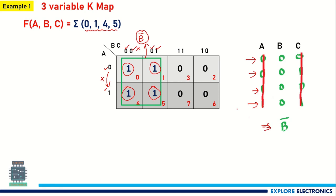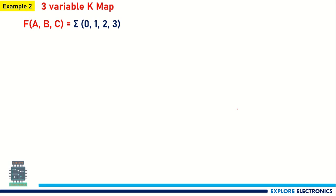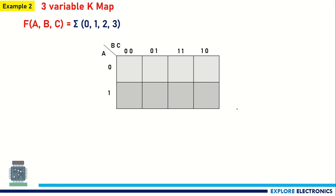Now let me take a second example. Here we have 0, 1, 2, 3 as minterms. So in the K-map, I am going to write cells 0, 1, 2, 3 with value 1, and remaining cells 4, 5, 7, 6 with zeros. Again, I need to look for grouping of adjacent cells having value 1. Cells 0, 1, 3, 2 all have 1 and are all adjacent, so I am grouping them with a single group.